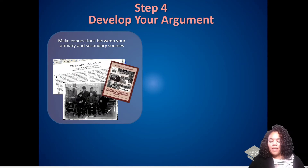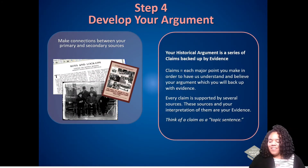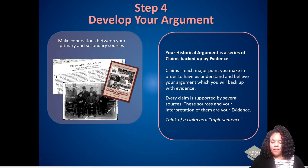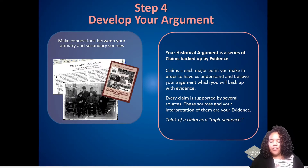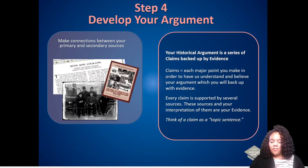First, make connections between your primary and secondary sources. You've probably been noticing these connections throughout your research process, like where two sources describe the same event, or you have different sources quoting the same person. It can be helpful to have a Google document where you can rearrange and sort your pieces of evidence, or even write them out on a note card that you can arrange and rearrange as you find these connections.